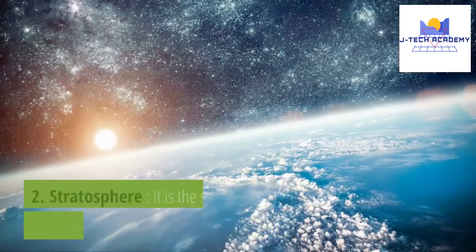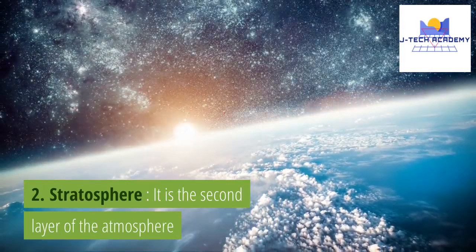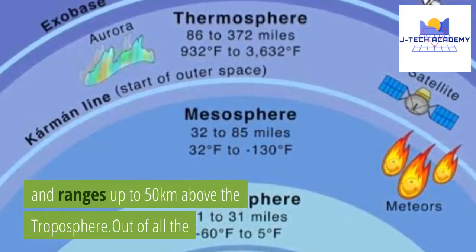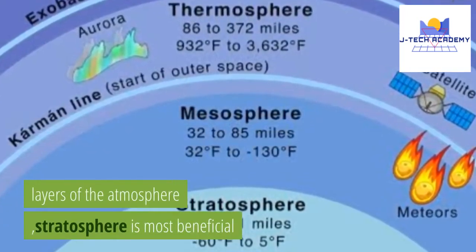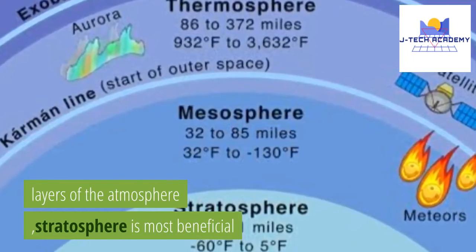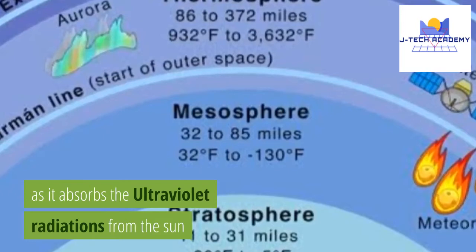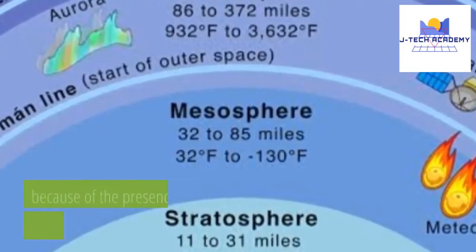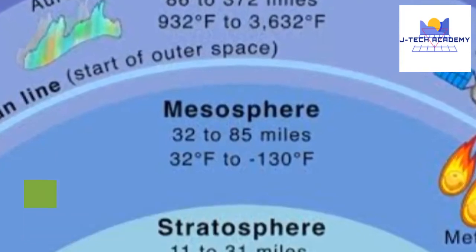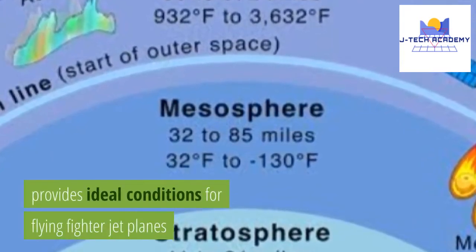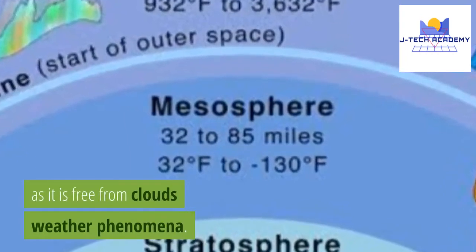2. Stratosphere. It is the second layer of the atmosphere and ranges up to 50 km above the troposphere. Out of all the layers of the atmosphere, the stratosphere is most beneficial as it absorbs the ultraviolet radiations from the sun because of the presence of ozone in it. The layer also provides ideal conditions for flying fighter jet planes as it is free from clouds and weather phenomena.